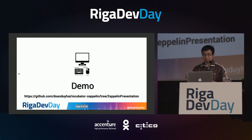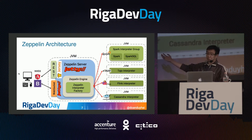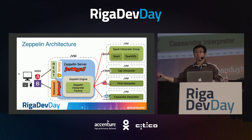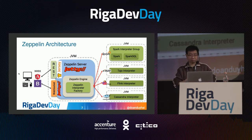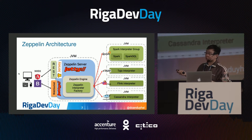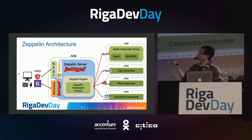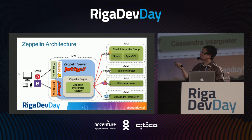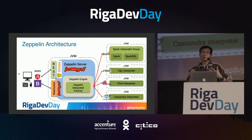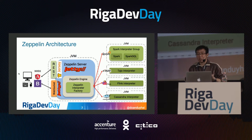So how does Zeppelin work? Here is the architecture. On the left you have the web front end, built with AngularJS, Twitter Bootstrap, and NVD3 for graphs. This front end talks with a backend server — the Zeppelin server. Zeppelin exposes two interfaces: one REST interface and one WebSocket for real-time updates. But in fact Zeppelin by itself isn't doing anything — it is just like a proxy orchestrator.